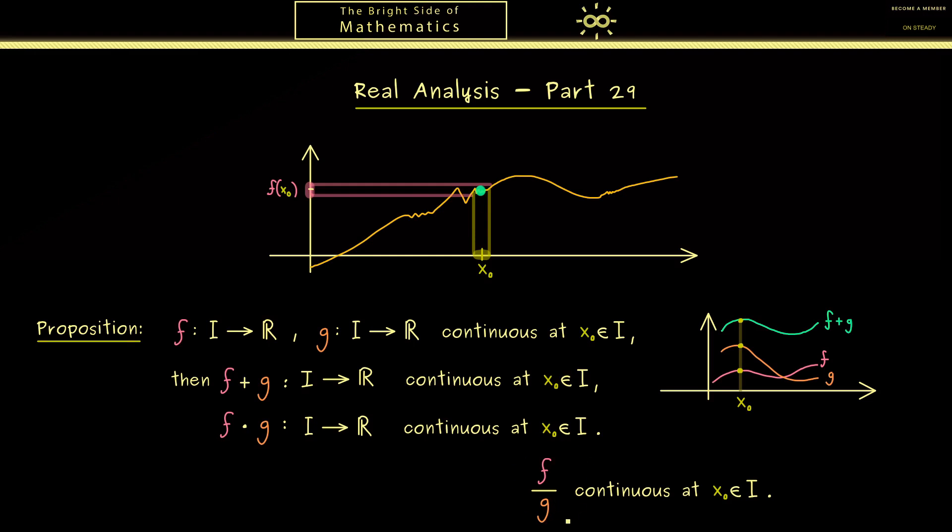However of course there the domain i will change a little bit. Nevertheless for us the most important part is that g of x0 is not 0. So that's the only thing we need in addition, you can only divide if we exclude 0.